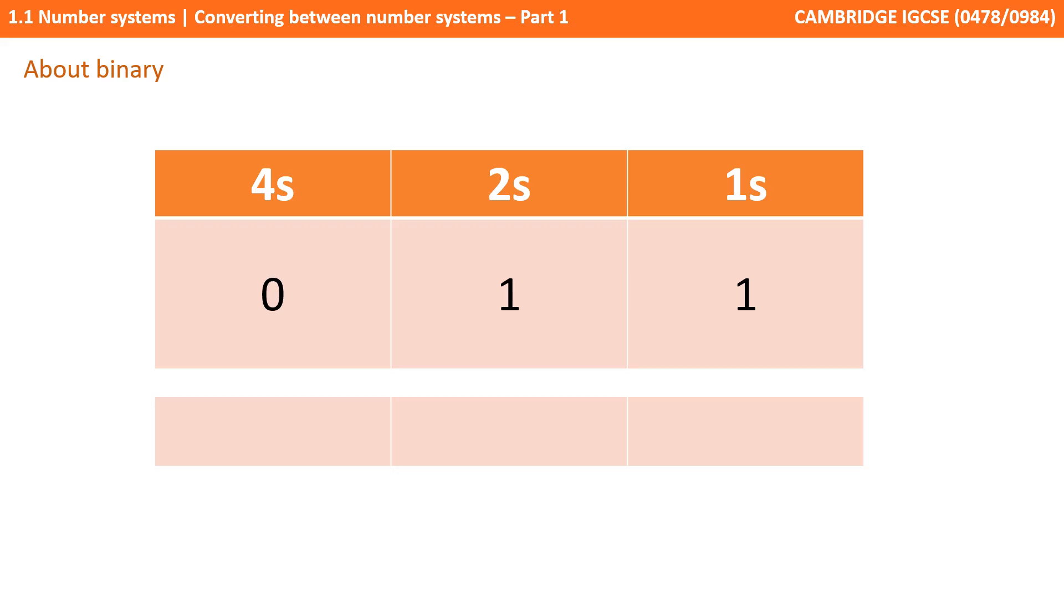The binary system, known as base 2, works in a very similar way. The only difference is there's no number above a 1. Therefore, when we want to represent the number 2, we have no unique symbol for that, and we have to start using a new column.